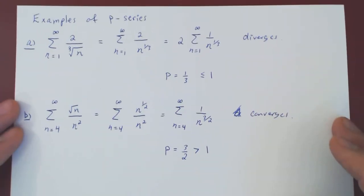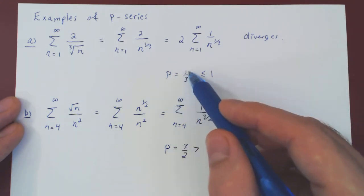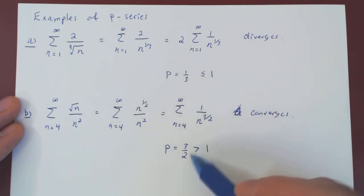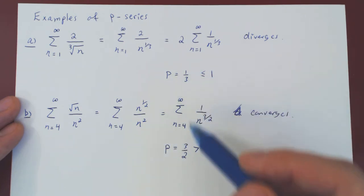And you don't need to write in either case by the p-series test, as when you write p equals something and you compare it to 1, either less than or equal to 1 or larger than 1, this is clear that you are making use of the p-series test.